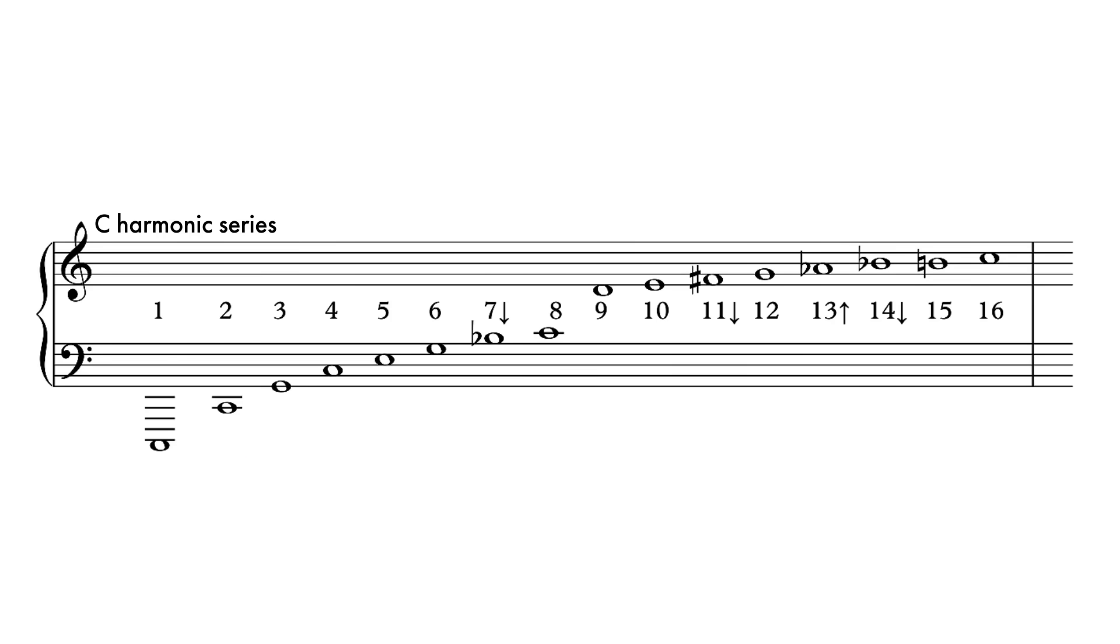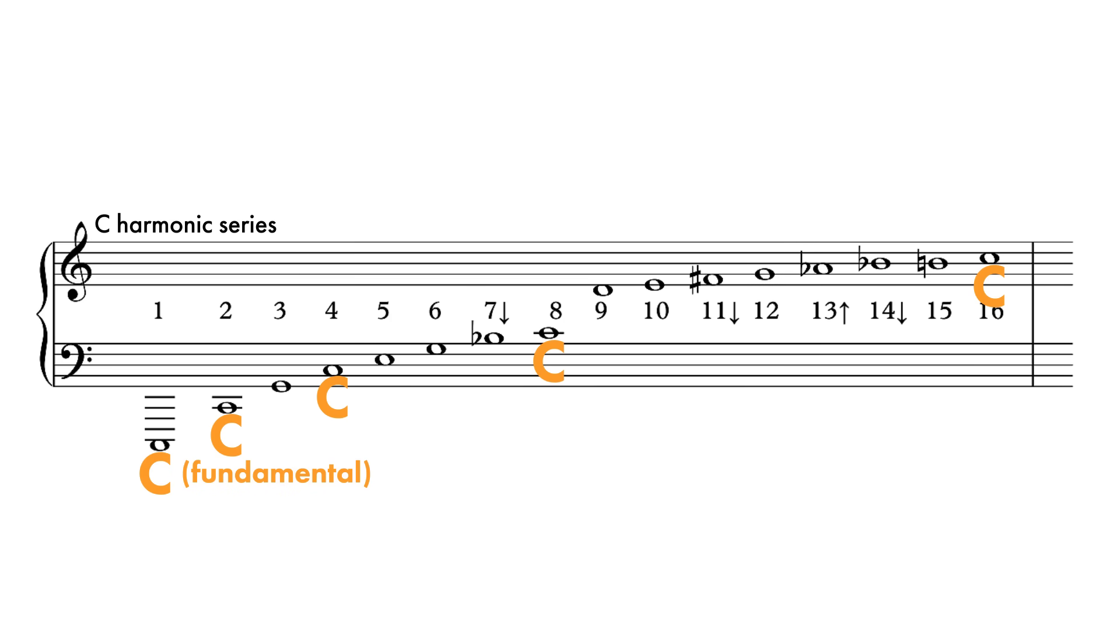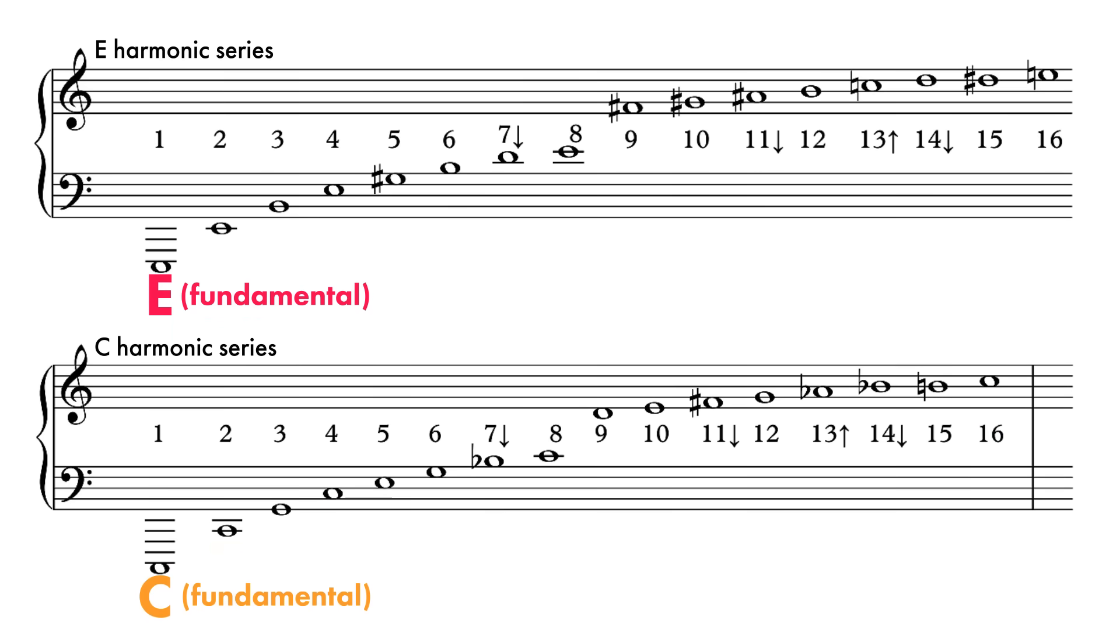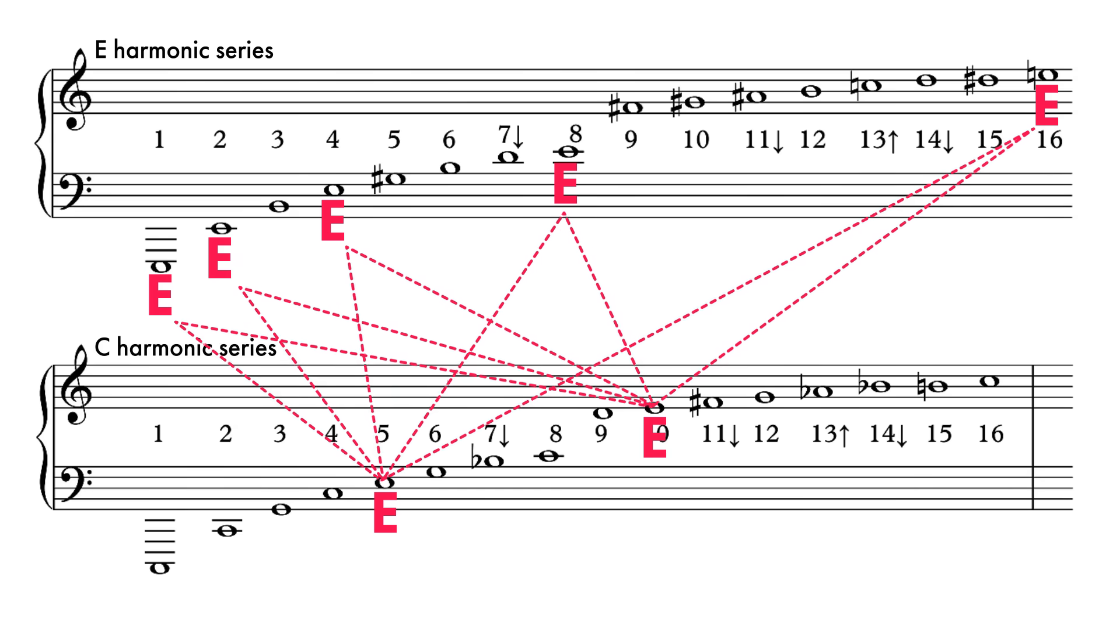So for instance if we play a C, look at how many C overtones we have. If we play an E with a C, well there's a bunch of E's in the overtone series on C. And then in the overtone series on E, there's going to be all those E octaves. So you've got a lot of alignment that sounds good to us.